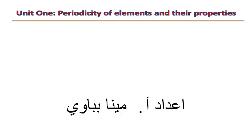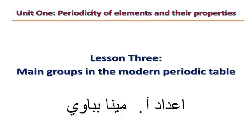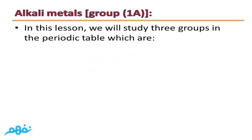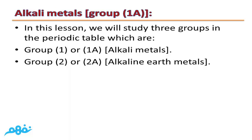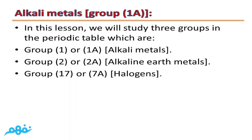Unit 1: Periodicity of Elements and Their Properties, Lesson 3: Main Groups in the Modern Periodic Table. In this lesson, we will study three groups in the periodic table: Group 1 or 1A, called alkali metals; Group 2A or Group 2, called alkaline earth metals; and Group 7A or 17, known as halogens.